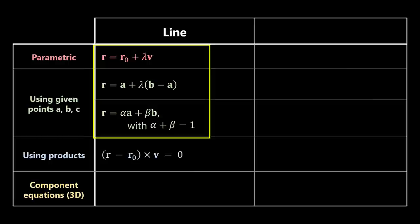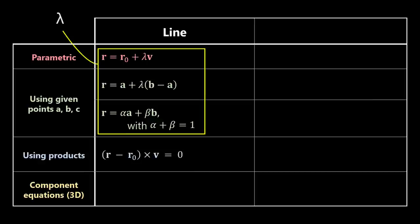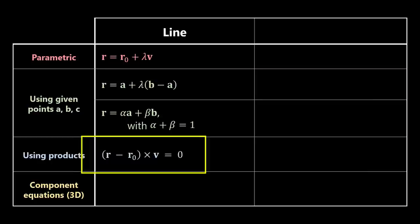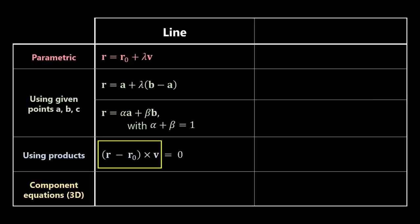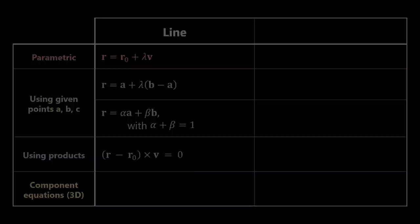Something should be said about this equation. Previous equations for the line gave us a recipe for creating the line — feeding the parameter values from minus infinity to infinity into those equations, we could obtain the locations of the infinite points along the line. This new equation using the cross product, however, cannot do this. There is no parameter. The equation is just a condition that any point r on the line must fulfill. Also notice that the left-hand side is a vector product and therefore has three components, so this simple equation really involves three different equalities.